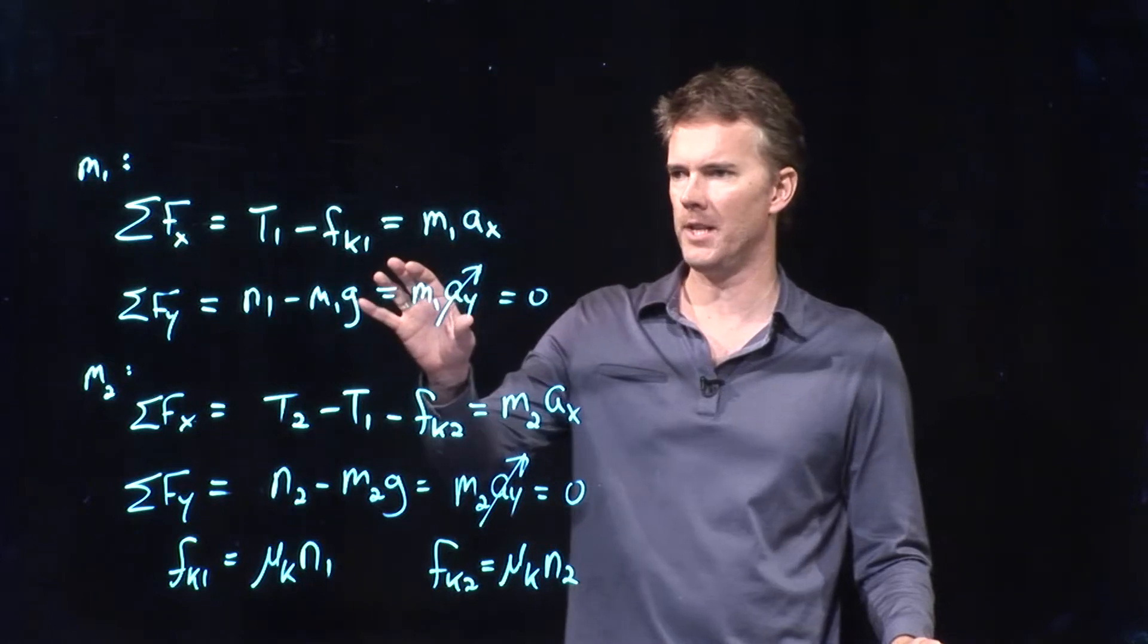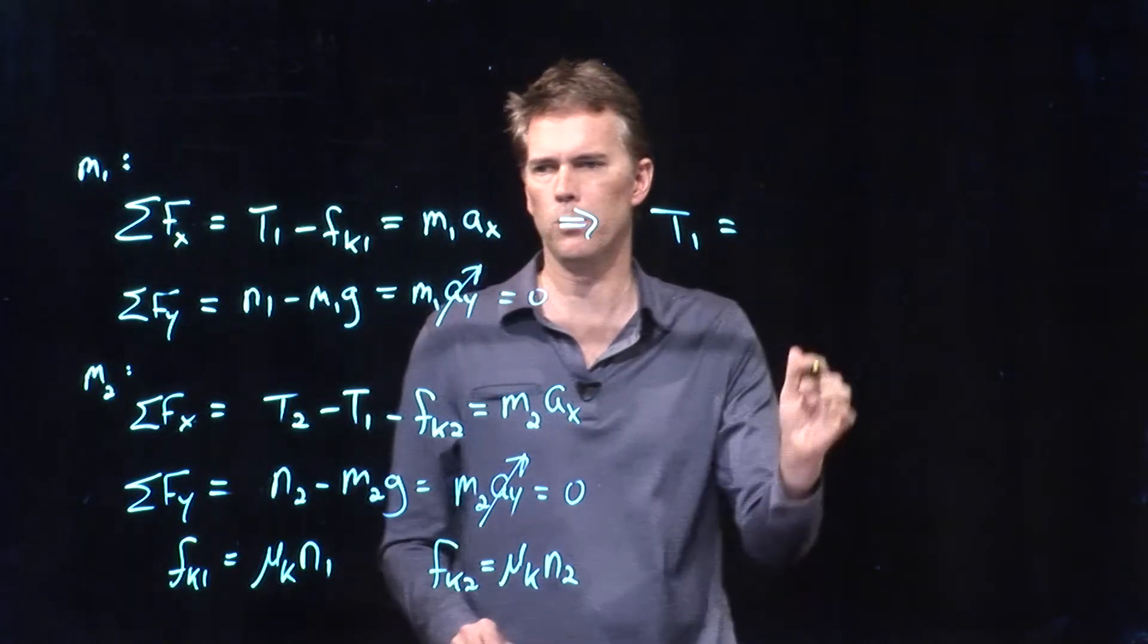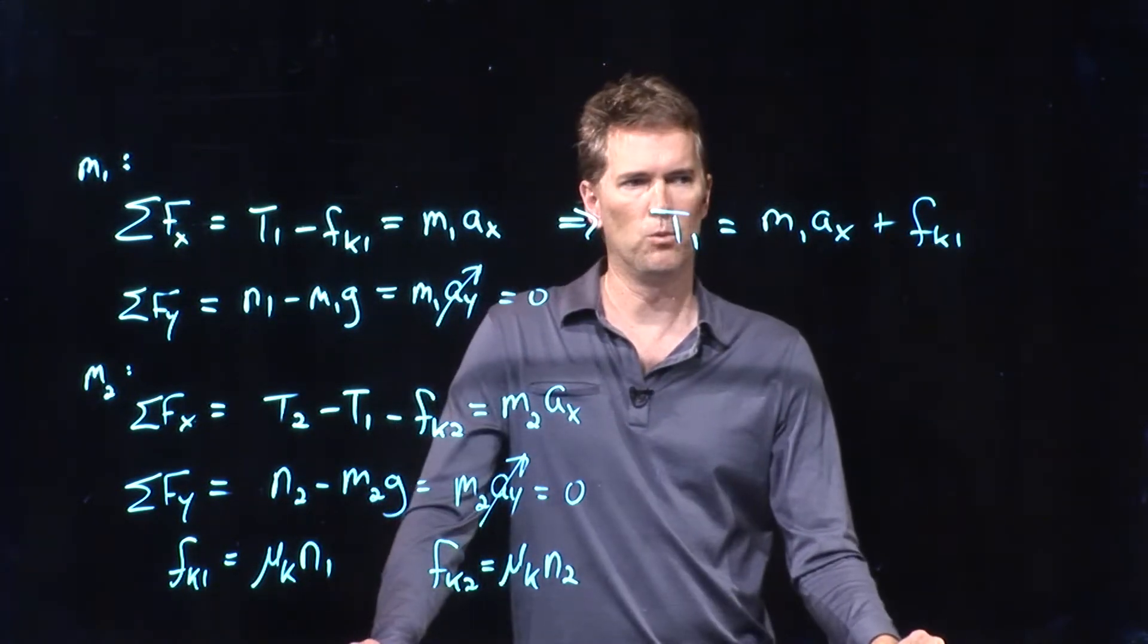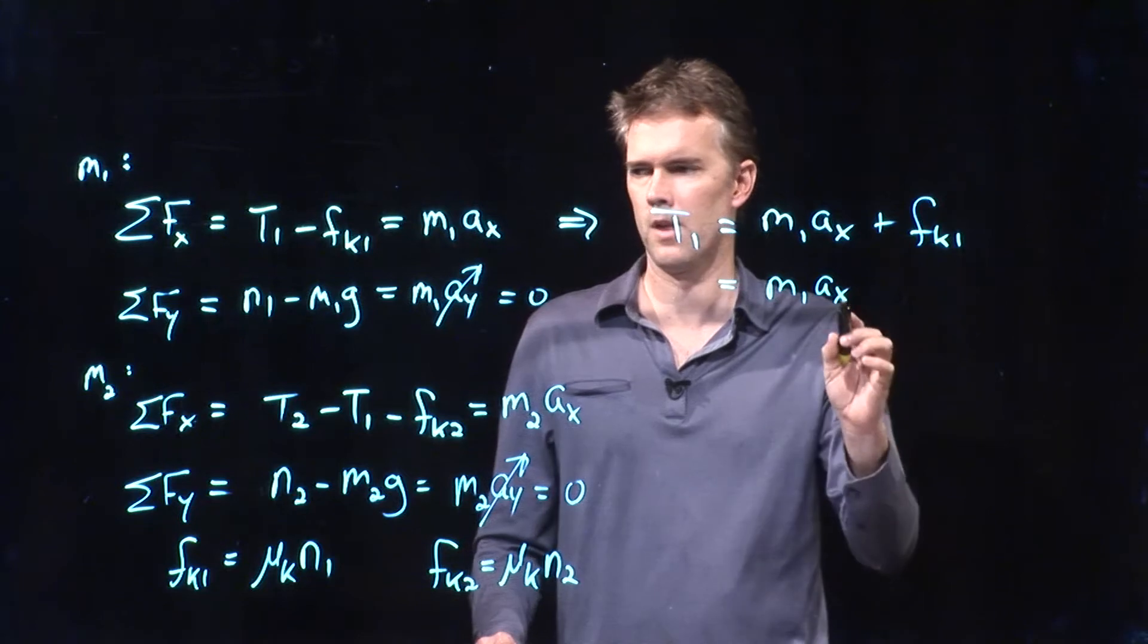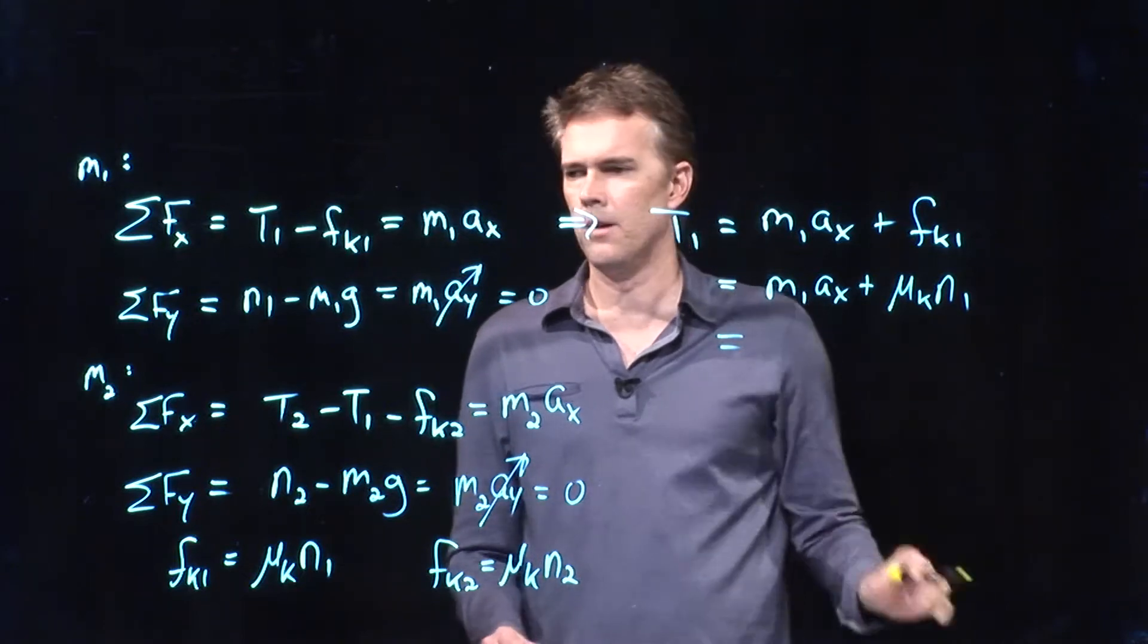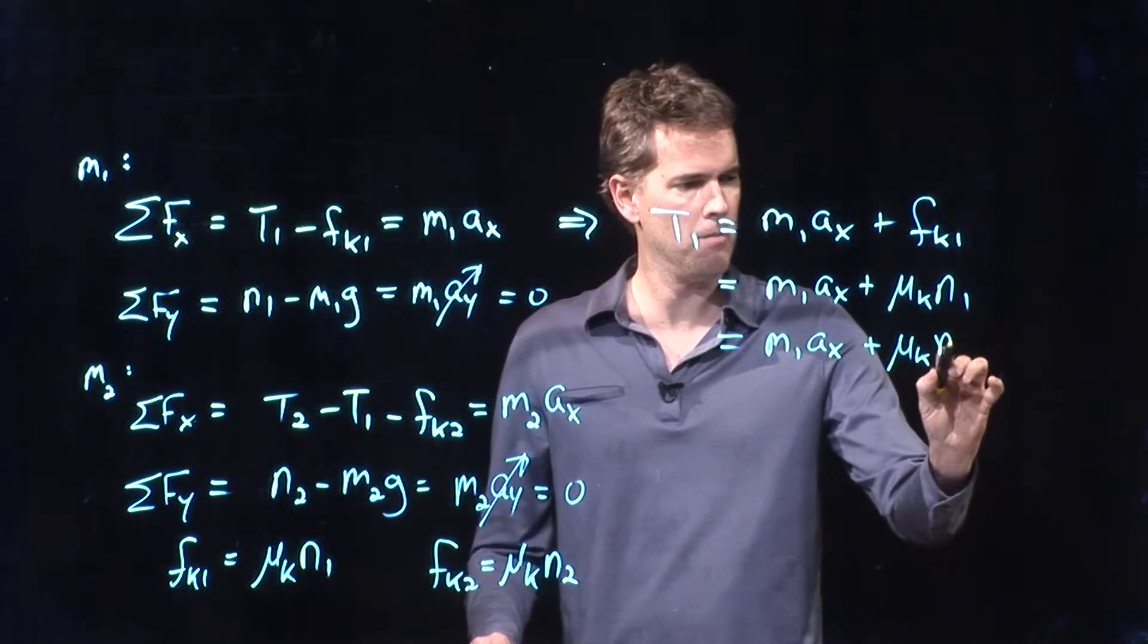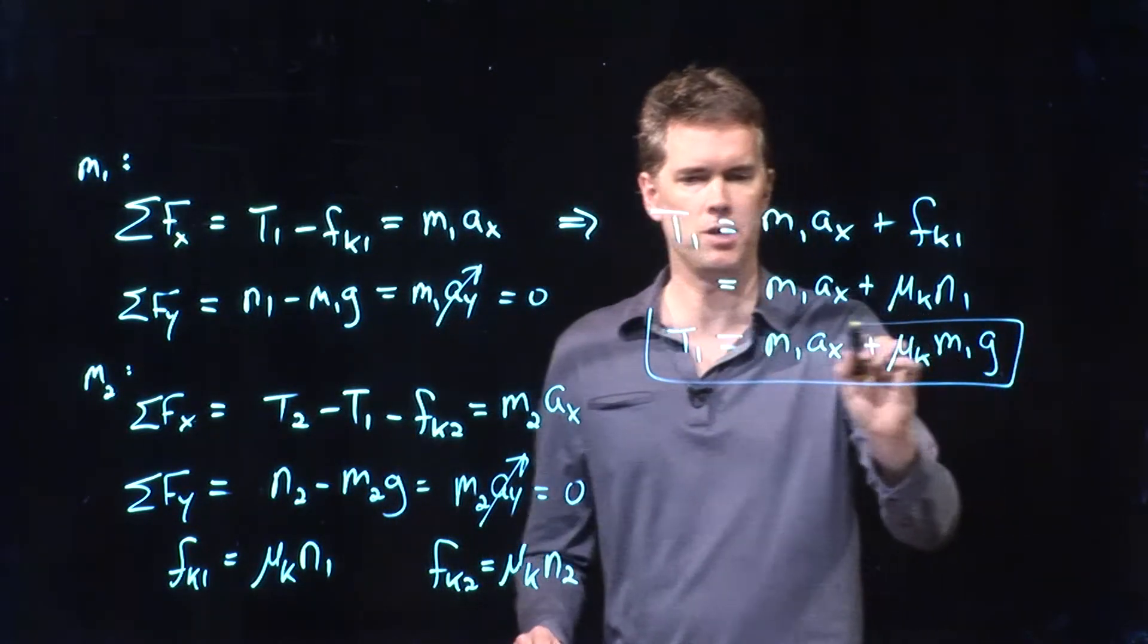If we're looking for tension T1, we can start with this very first equation. And we can write T1 is equal to M1 times A sub x plus FK1. What is FK1? FK1 is equal to mu K times N1 from our last equation. But from this equation, we know that N1 is just M1G. So this is the tension T1.